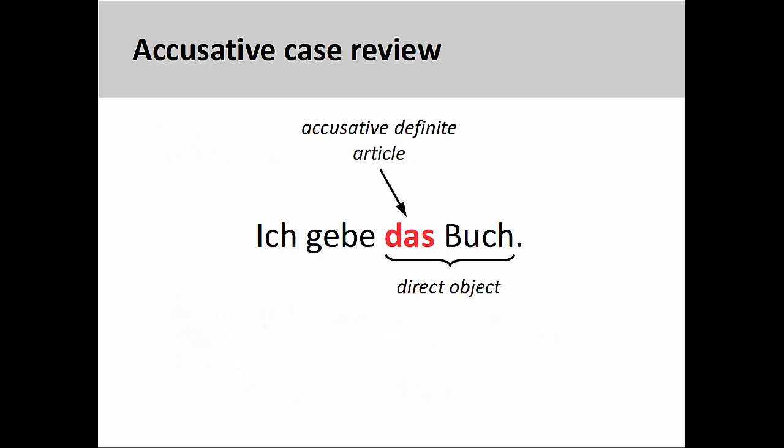You will recall from the presentation on the accusative case that the direct object receives the action of the verb. For example, in the sentence 'Ich gebe das Buch' — I give the book — the book receives the action of being given. In German, the direct object is expressed through the accusative case. The neuter definite article 'das' is here in the accusative case, indicating that the following noun is the direct object of the sentence.